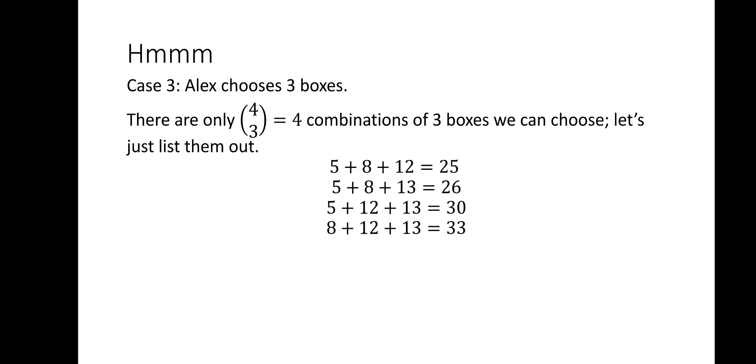8 plus 12 plus 13 is 33, which is also a multiple of 3. So, 2 of the combinations out of our 4 work, so our probability for case 3 is 1 half.